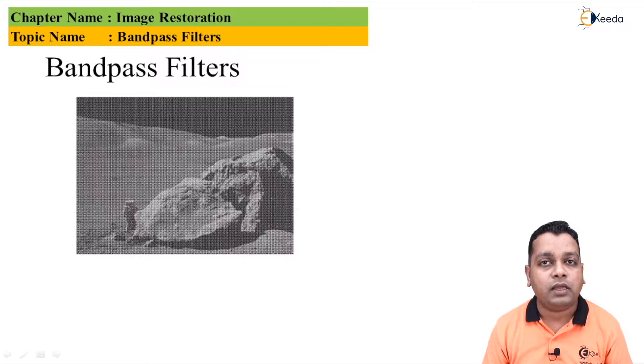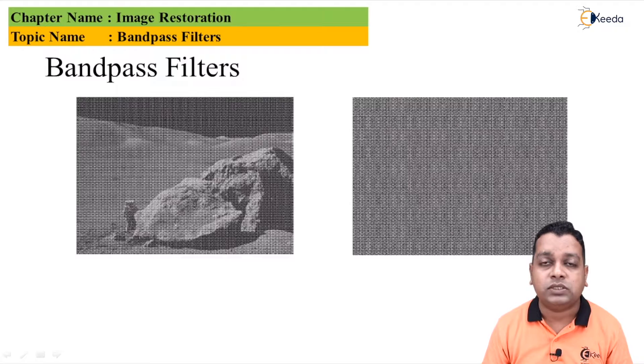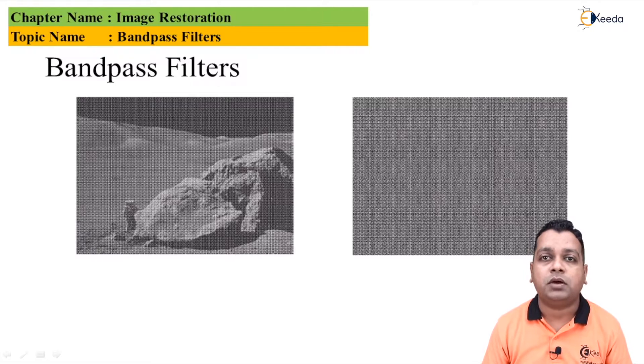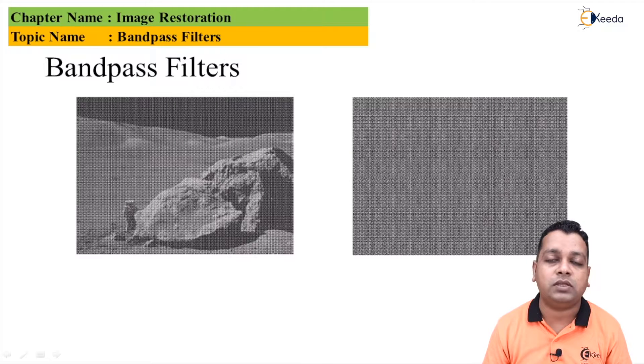While we apply the band pass type of the filtering, as we have discussed, we can have the isolation of the selective frequency patterns. So this is the extracted frequency periodic type of noise by application of the band pass filtering. This way we can achieve the image restoration with the help of band pass filters.